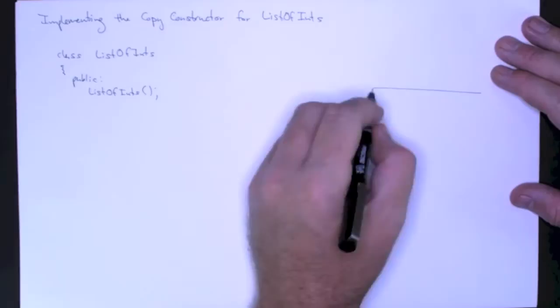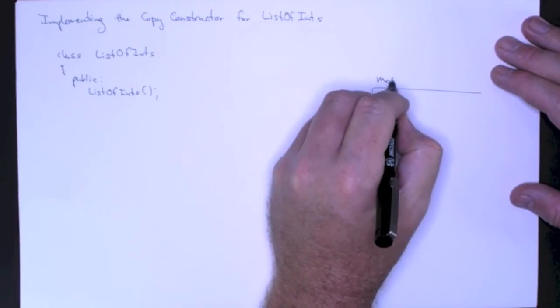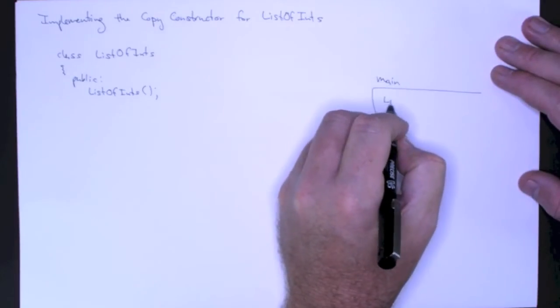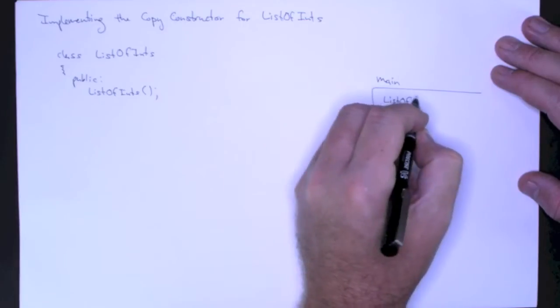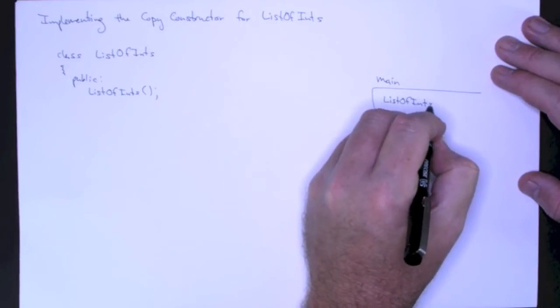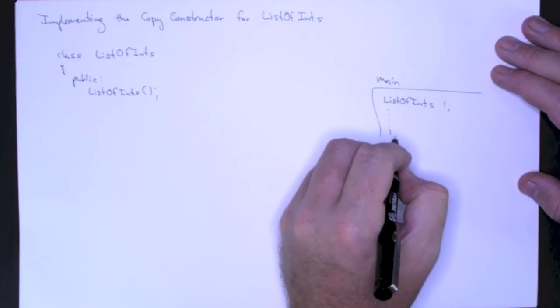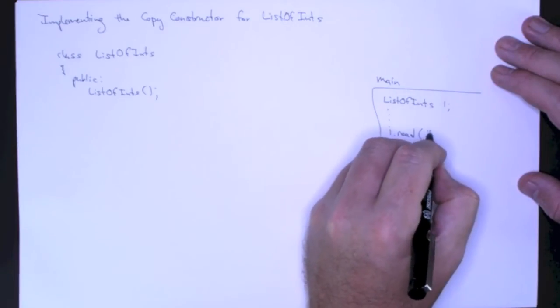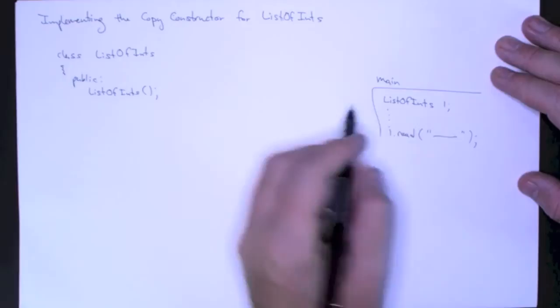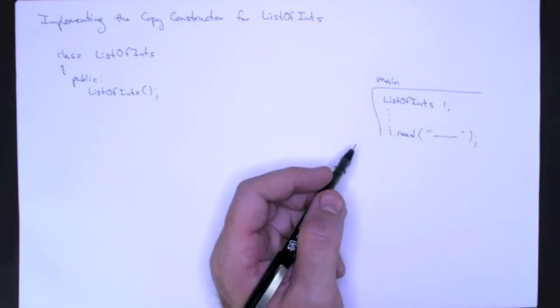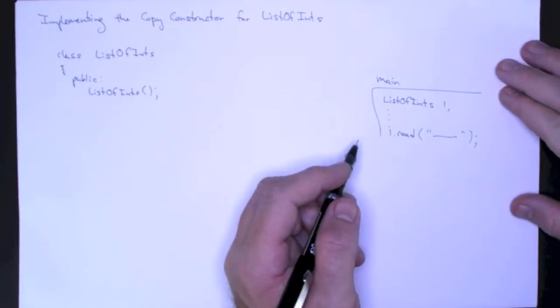Remember that in main, for example, how do we use a copy constructor? So if I have a list of ints called l and maybe I call read down here somewhere, and I want to make a copy of this not using assignment but using the copy constructor...